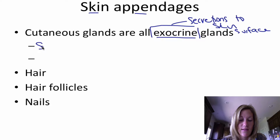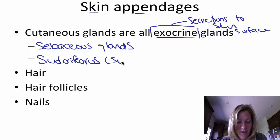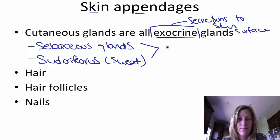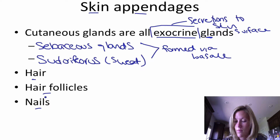The first are called the sebaceous glands, and the second are the sweat glands, or sudoriferous glands. So we have sebaceous glands and sudoriferous glands, and both of these are formed by the stratum basale. Our other skin appendages include glands, hair, hair follicles, and nails. We're going to talk mostly about glands and then touch quickly on hair, hair follicles, and nails.